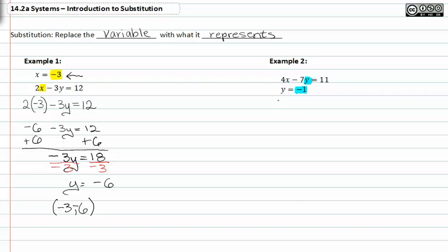So when we replace it, we get four x minus seven times negative one in parentheses is equal to eleven.